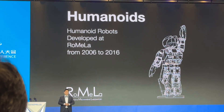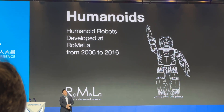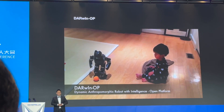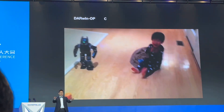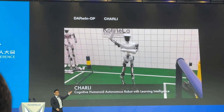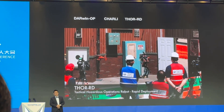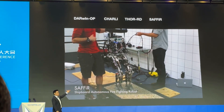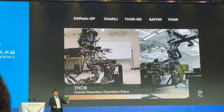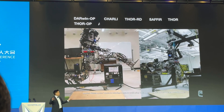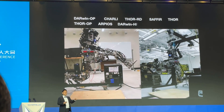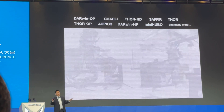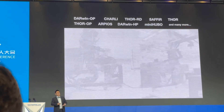Let me quickly show you some of the robots we developed from 2006 to 2016. This robot is Darwin OP — a fully open-source human-based robot for research and education, one of the most widely used robots. Charlie is considered the United States' very first adult-sized human-based robot. Thor RD for the DARPA Robotics Challenge. Sapphire — a shipboard autonomous firefighting robot for the U.S. Navy. And Thor, the Tactical Hazardous Operations Robot, which uses novel series elastic actuators. We developed more than a dozen different human-based robots.